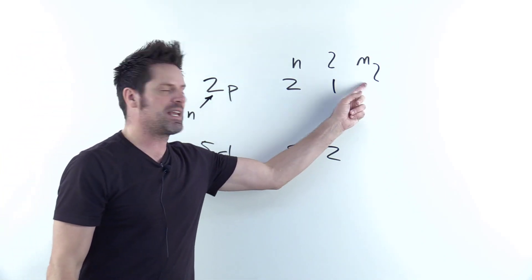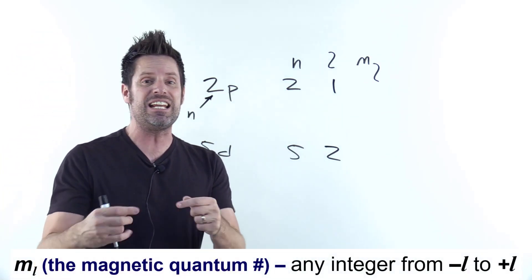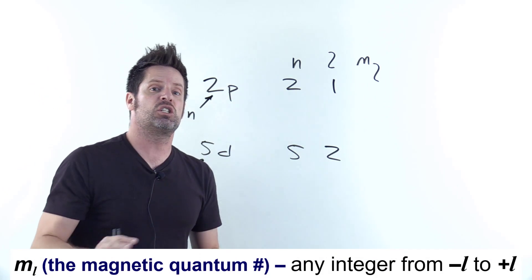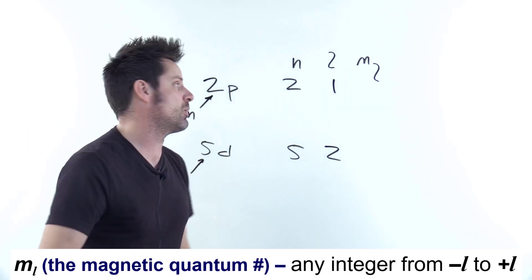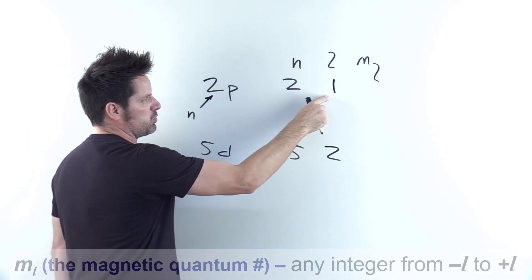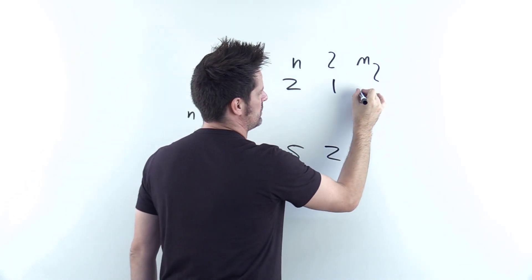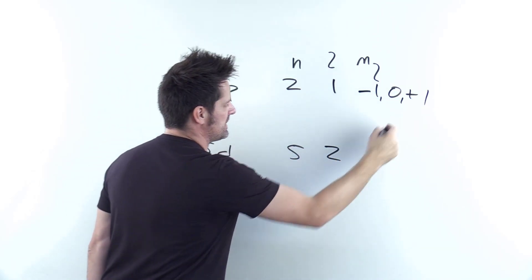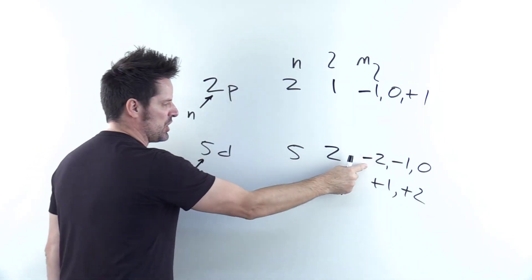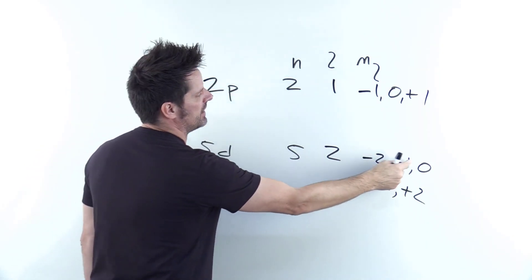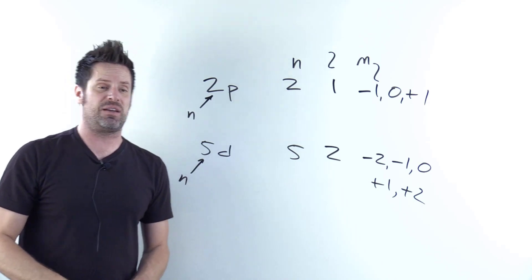Now where do I get the magnetic quantum numbers? Those are equal to each integer spanning from negative L to positive L, including 0 in the middle. So if I've got L equals 1, my possible m sub L values are negative 1, 0, and positive 1. For L equals 2 they are negative 2, negative 1, and so forth right there. You can see this clearly.